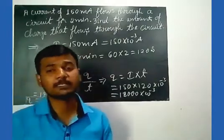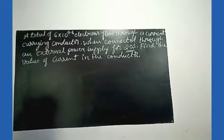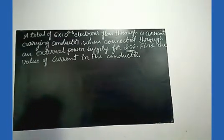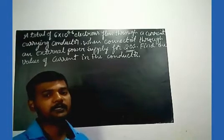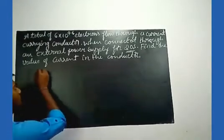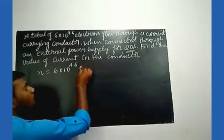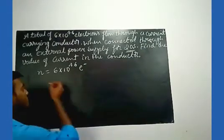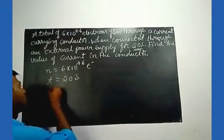Let us discuss the next problem: a total of 6 × 10 to the power 46 electrons flow through a conductor when connected through an external power supply for 20 seconds — find the value of current in the conductor. What is given: number of electrons n = 6 × 10 to the power 46, and time t = 20 seconds. We need to find the electric current I.